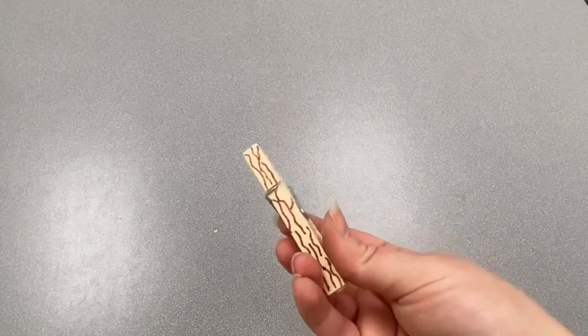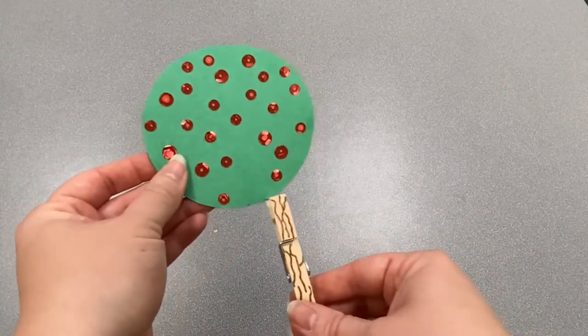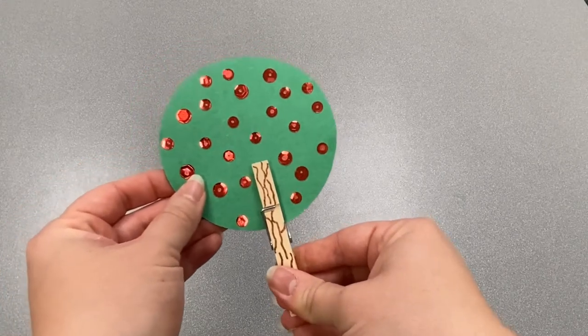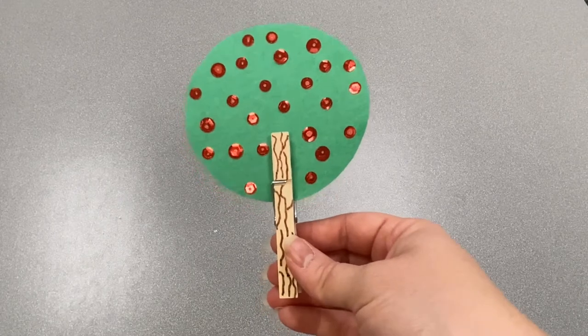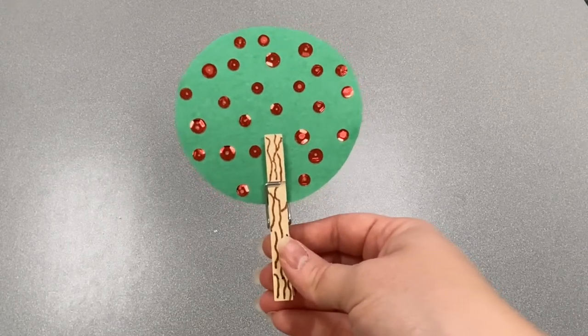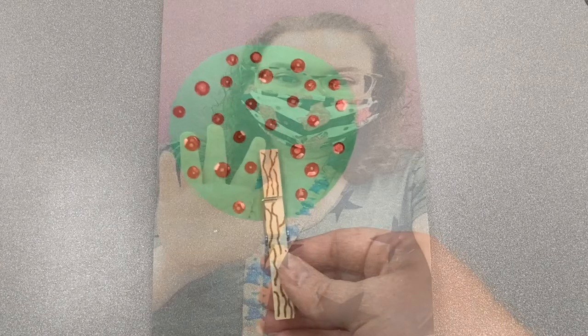Now that we've finished the bark for our tree and our trunk's all done, we can connect it to the top just like that and we have a whole tree with apples to celebrate fall. Doesn't it look great? Thank you so much for watching and I hope you enjoyed making a cute little apple tree to celebrate the fall season. Have a good day.